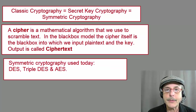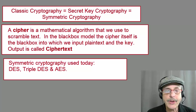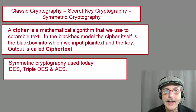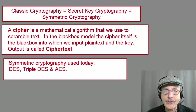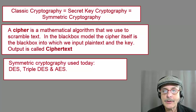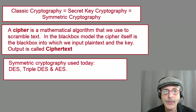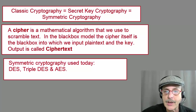Some examples of symmetric cryptography that are used today are DES, triple DES, and AES. These are the same as the ciphers used for thousands of years, in that the same key encrypts and decrypts them. However, the modern algorithms are much, much stronger. Now, if we use a good cipher such as AES, the only way an attacker can decrypt the ciphertext is to try every possible key, which is called a brute force attack. That's why the longer the key, the more security you get.